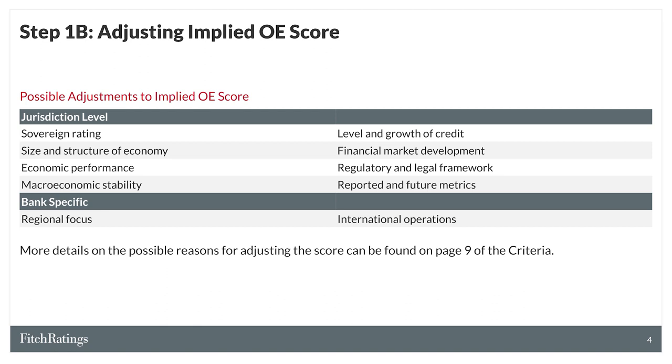As a next sub-step, Fitch considers whether to adjust the implied score in arriving at the final, notch-specific, assigned score.